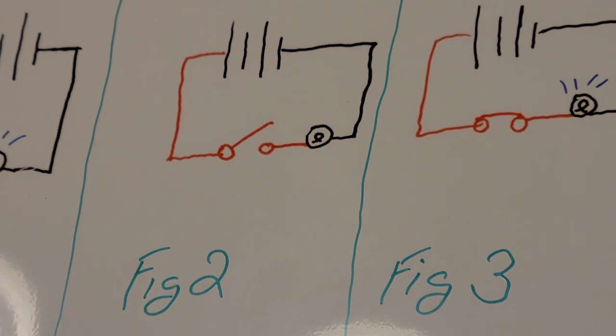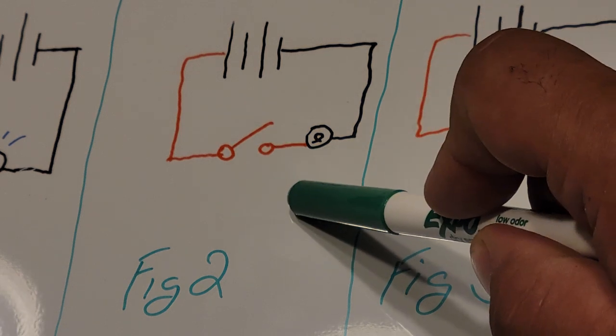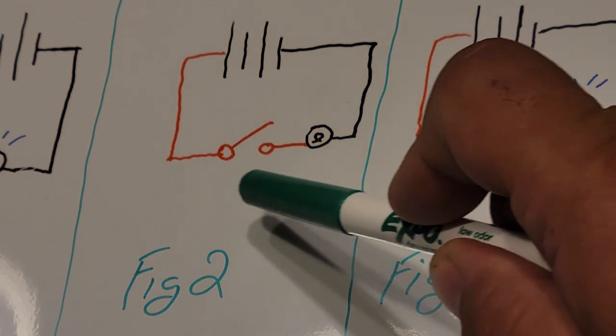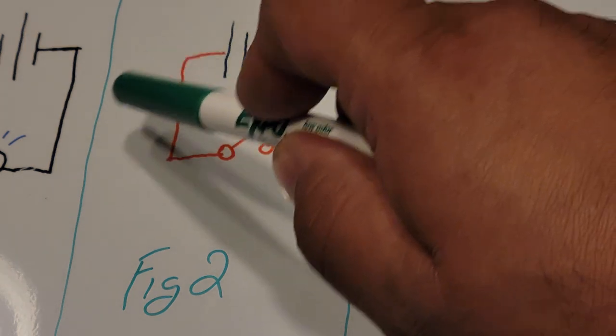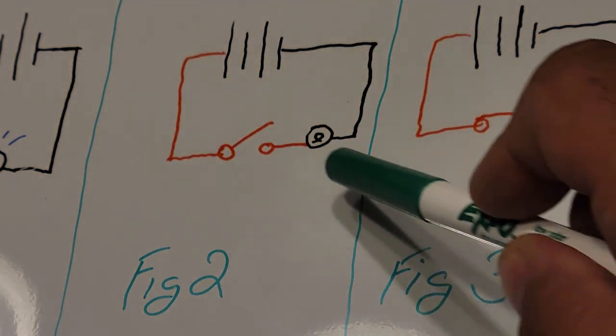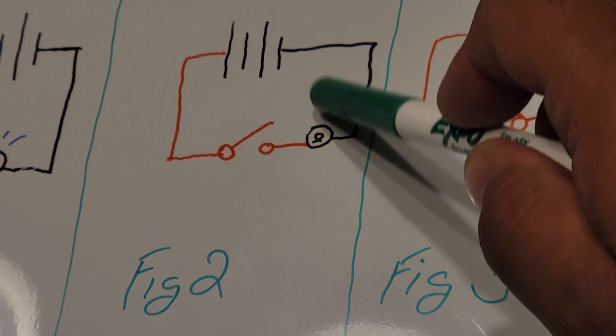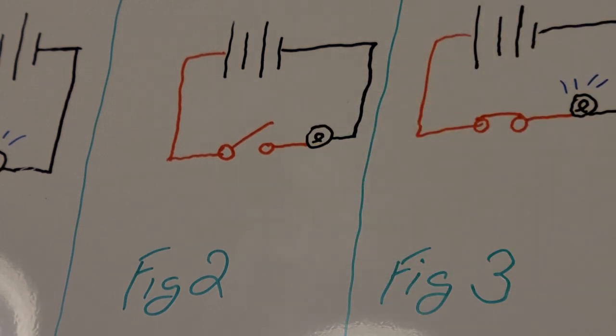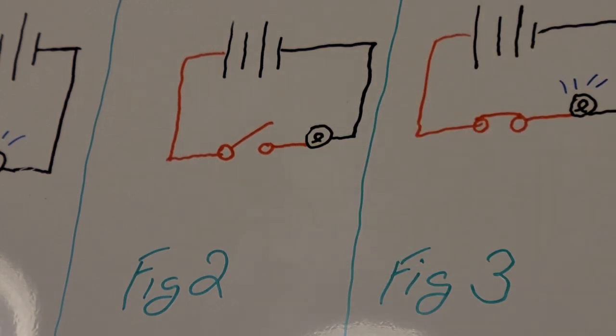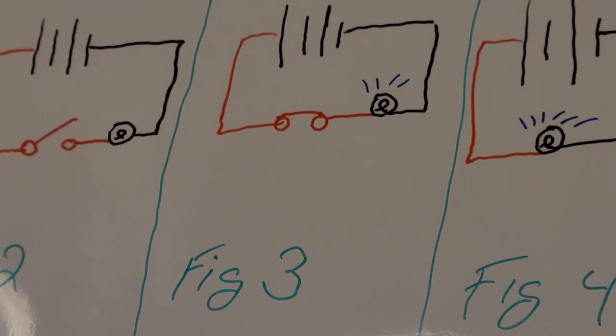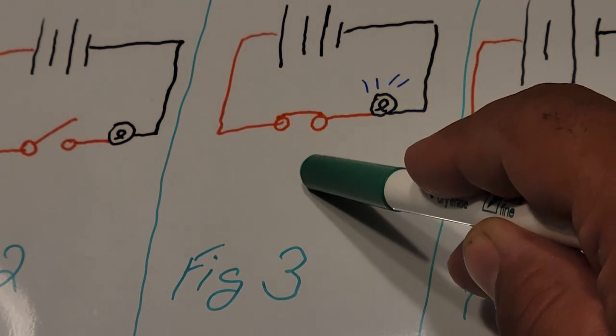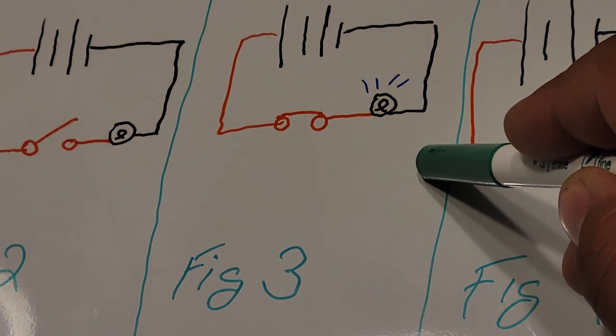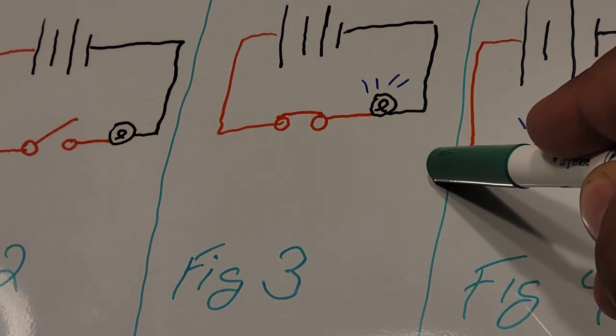Figure two, there's your open switch. When a circuit is open, electricity cannot go from the battery to the bulb. You can see here I don't have the bulb lit up. Figure three is just the opposite of figure two. Now the switch is closed and the bulb is lit up.